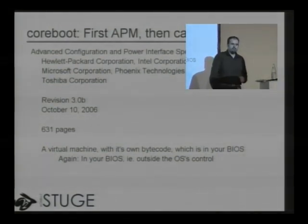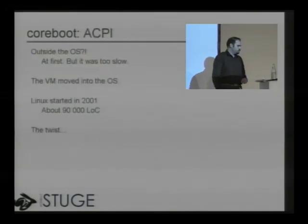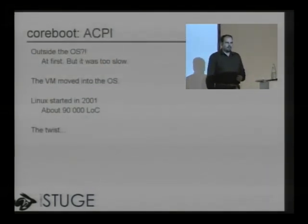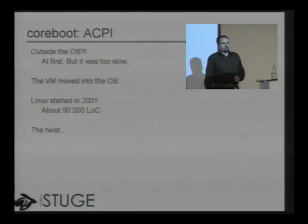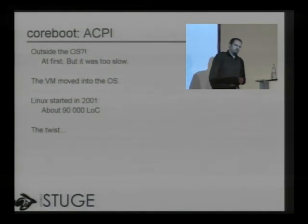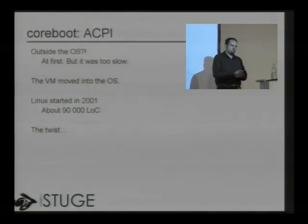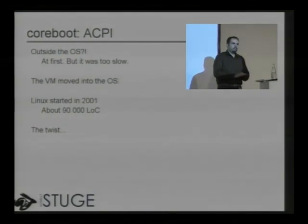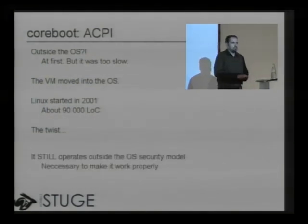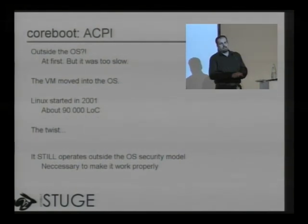Among other things, ACPI specifies a virtual machine with its own bytecode that runs in the BIOS — outside the operating system. At first they did it that way, but it turned out it was too slow — a 5% performance hit from having this virtual machine in the BIOS. So they moved the virtual machine into the operating system. Linux started doing this circa 2001. I've seen the figure 90,000 lines of code to implement this virtual machine, and the fun part is that it still operates completely outside the operating system's security model.